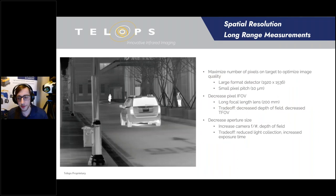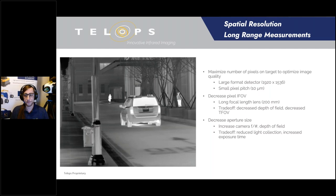Now that we have some basic terms down, the first general case is long-range measurements. Long-range measurements typically require large-format detectors with small pixel pitch. We can choose an optical setup featuring a long focal length lens to decrease the single pixel IFOV and ensure adequate pixel coverage on your distant target. The trade-off of a long focal length lens is reduced depth of field, resulting in a smaller range of depth in which objects can be focused. A reduced aperture can help by increasing depth of field, but the trade-off would be reduced photon collection, which might require higher exposure times and could limit your maximum frame rate.